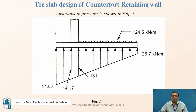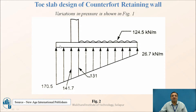This is the Pressure Diagram. The Toe Slab portion is shown here. We have calculated maximum pressure and minimum pressure — this was done in Part 1 during Stability Analysis, where we found the maximum and minimum pressures below the Base Slab. Minimum pressure is P/A minus M/Z, and maximum pressure is P/A plus M/Z.